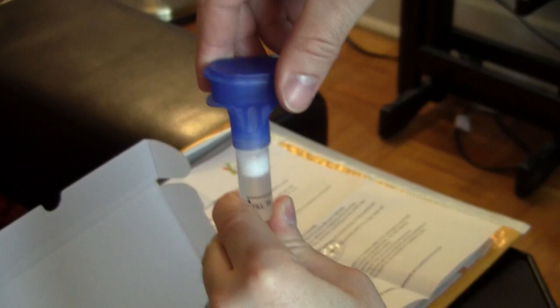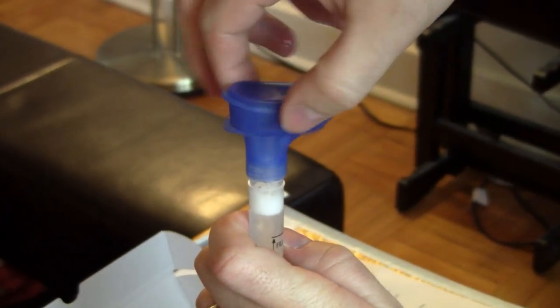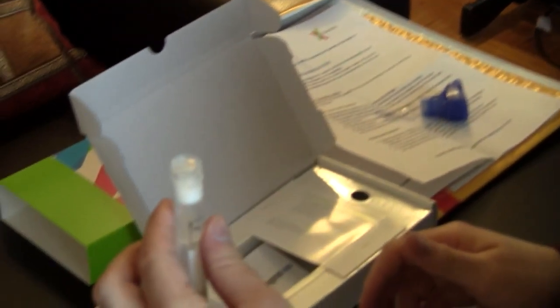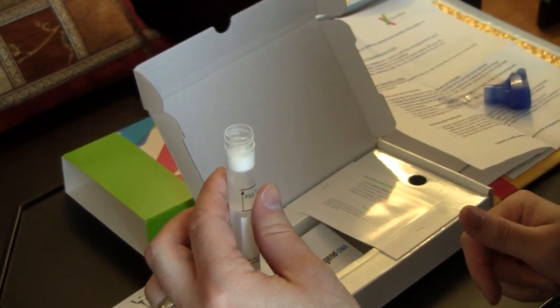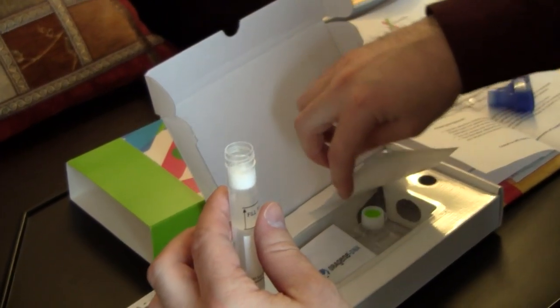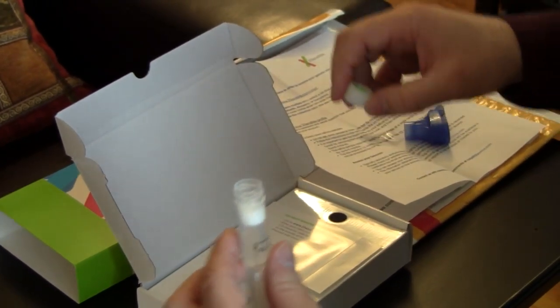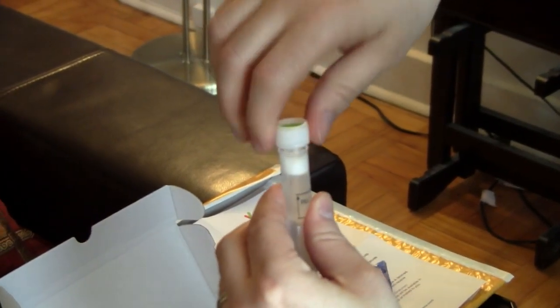So then hold the tube upright, unscrew the tube from the blue funnel, and discard the funnel. So I guess I have to unscrew this. Whoops, how do we, okay. Alright, so that was unscrewed. And then hold the tube upright, use the small cap in the green top, okay this is the cap, to close the tube. Keep the tube closed tightly.